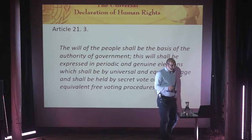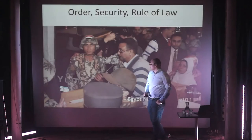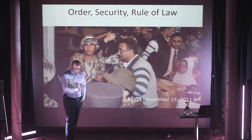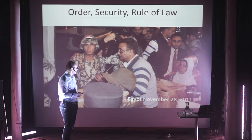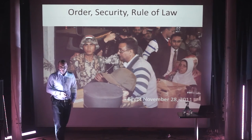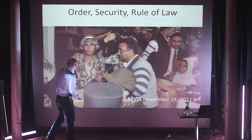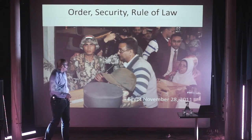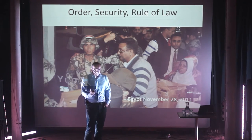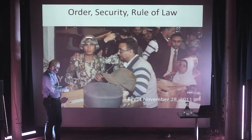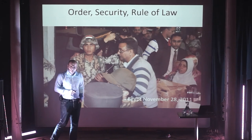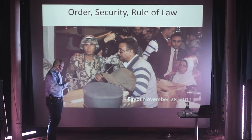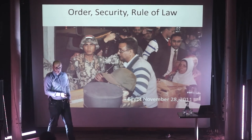To implement these human rights, you need order, security, and rule of law — these are the preconditions. In 2011, I was a guest of the High Election Commission in Egypt for the first free election. You can see the security — the military is clearly present. It's also about rule of law: in Egypt, judges were chosen to be responsible for the ballot box. From the time the ballot was put into the box all the way to the end of the election, judges were part of it.